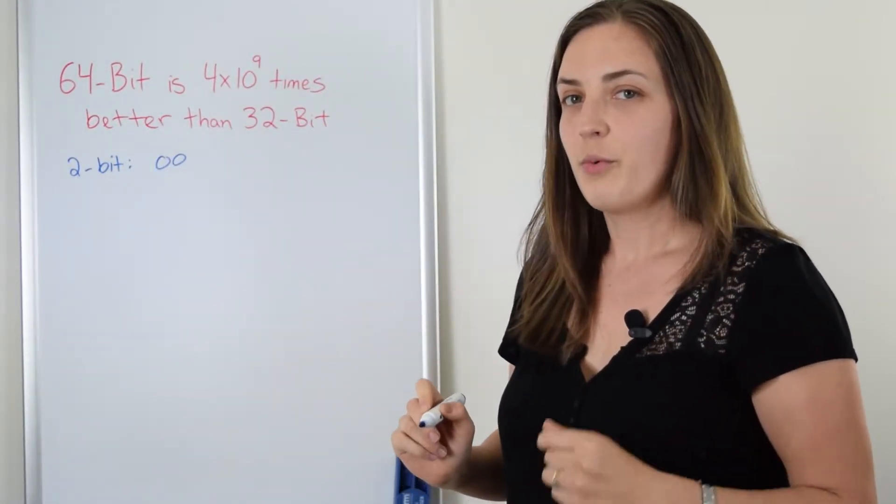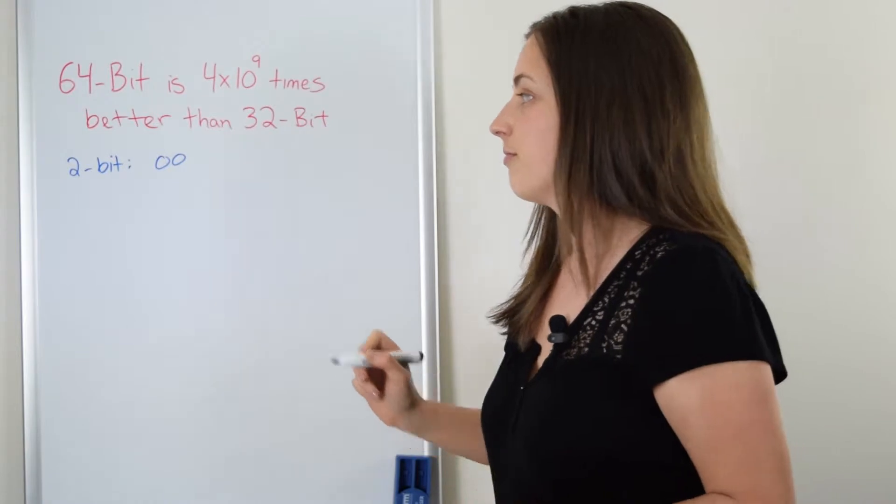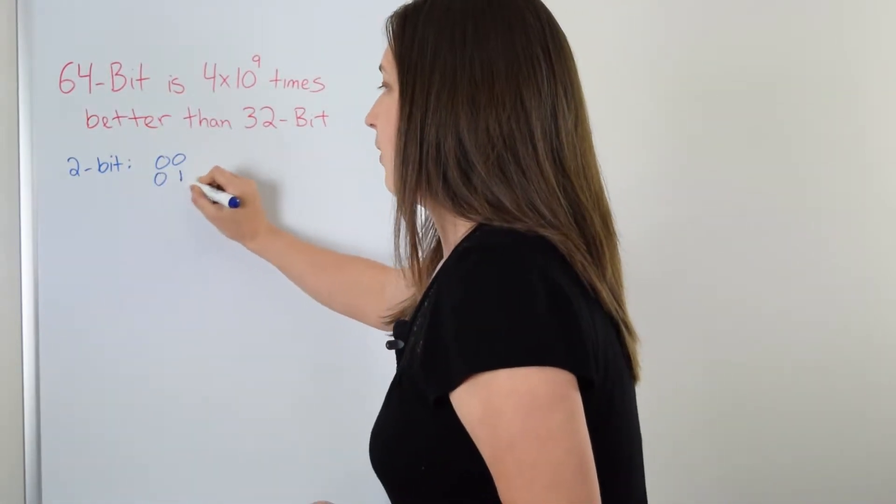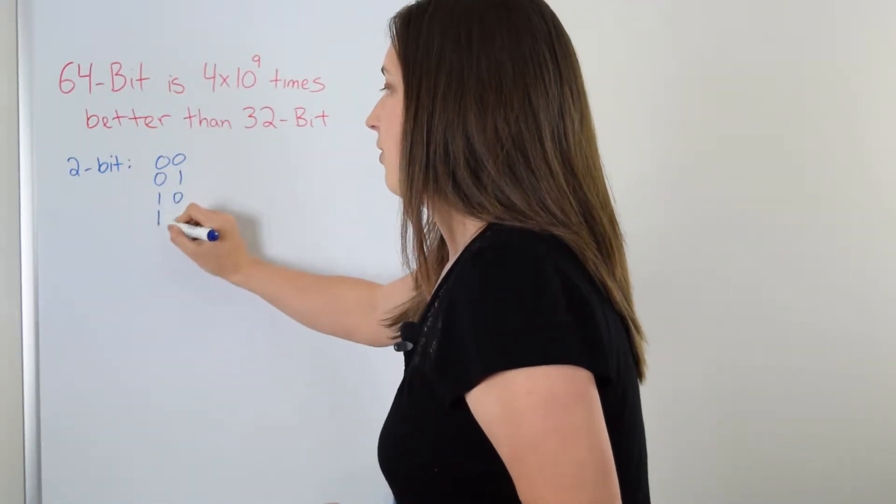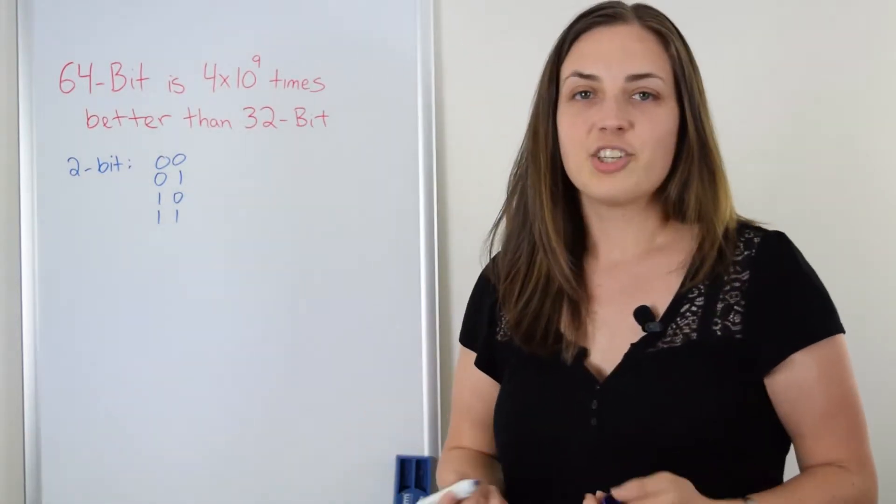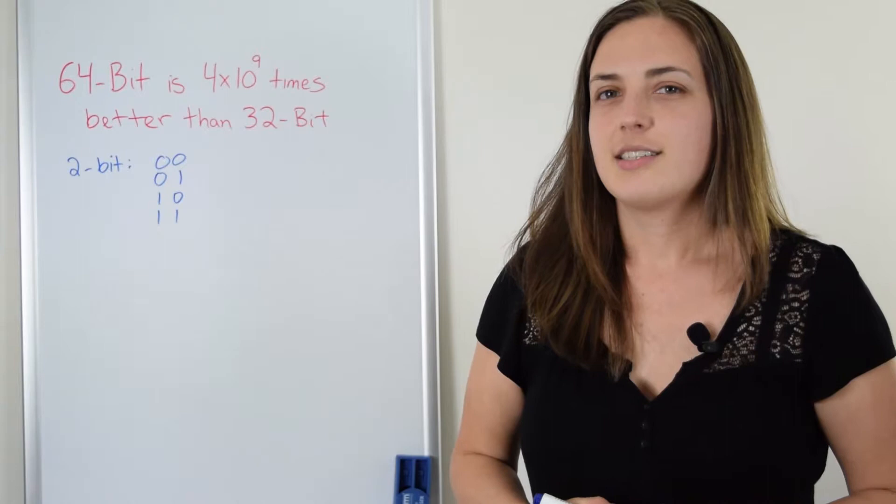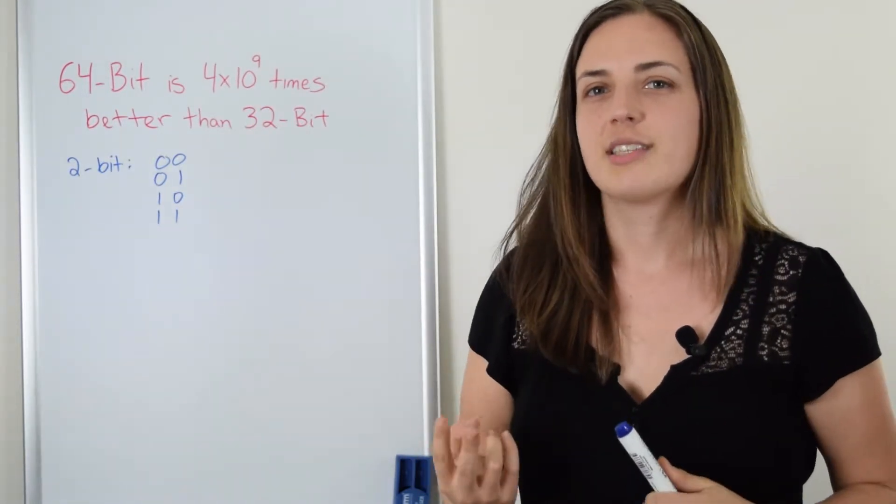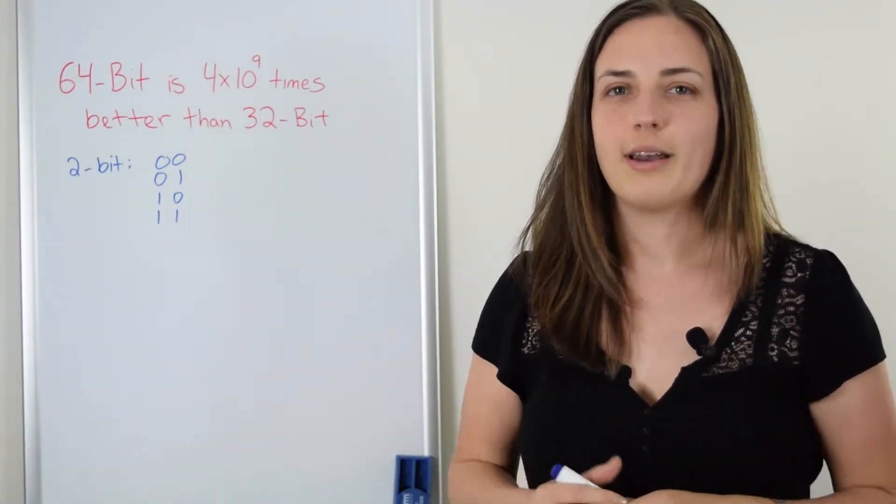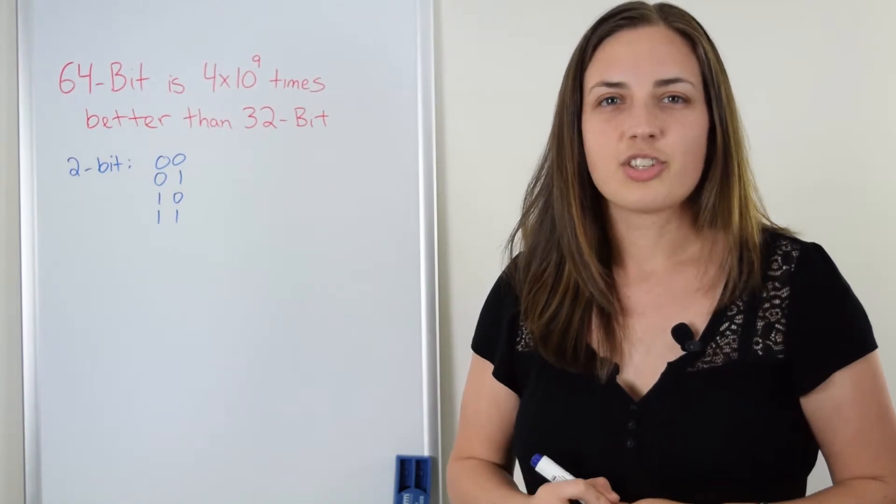In a two-bit system, we could have zero zero, zero one, one zero, or one one. Essentially, we have four options for a two-bit system. This is pretty easy to see because we have two positions and each position can be a zero or a one. So our answer, four, is just two squared.